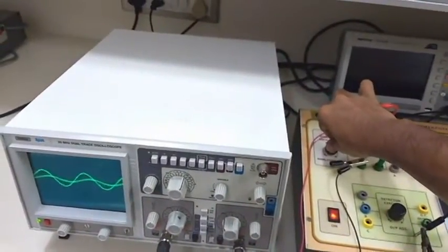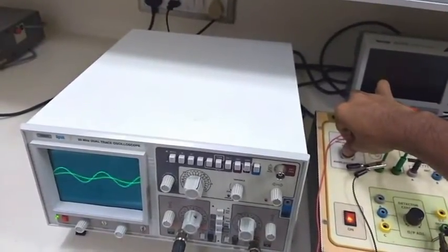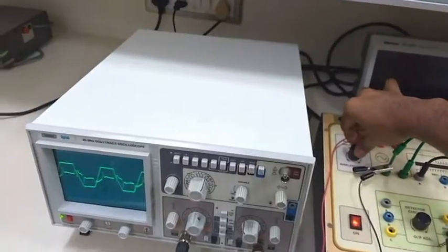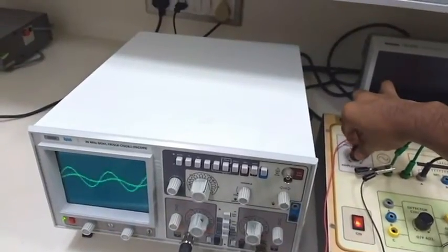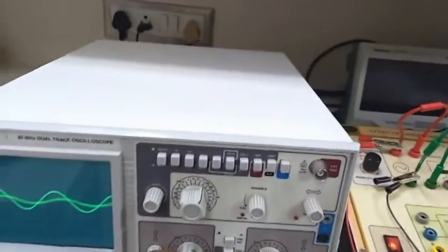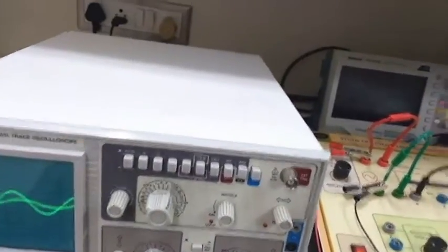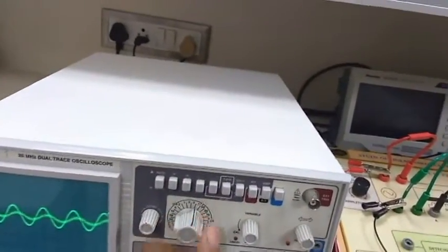Your output changes. So if sometimes you observe that there is a distortion in your output wave, vary this amplitude knob and adjust according to your waveform.